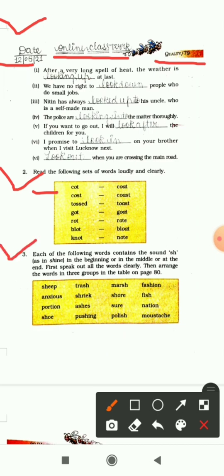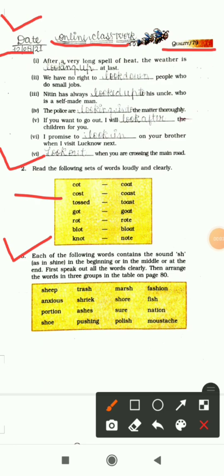Each of the following words contains the sound SH in the beginning or in the middle or at the end. First speak out all the words clearly. Then arrange the words in three groups in the table on page number 80. In each of the following words the sound SH is there in the beginning, in the middle, or at the end. We have to recognize and write these words in the correct category. First word is sheep, the SH sound is coming in the starting. Next is thrash, the sound is coming in the last. Marsh, the sound is coming in the last. Fashion, the sound is coming in the middle. Anxious, the sound is coming in the middle.